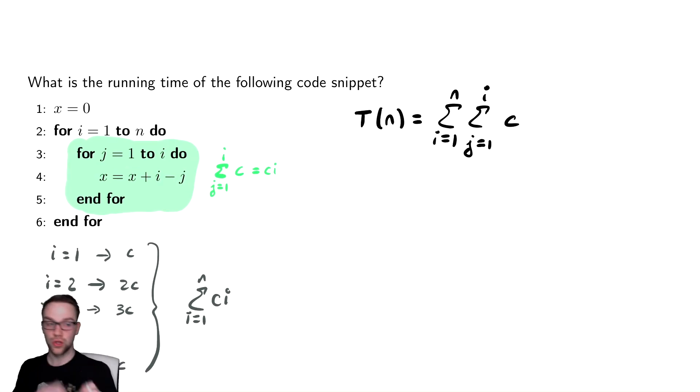You represent for loops as summations. And the thing that goes inside is the cost of executing that single line of code. This line of code, again, does the same thing every time it does assignment and addition and subtraction and retrieval, all of that. So it takes some constant amount of time every time.